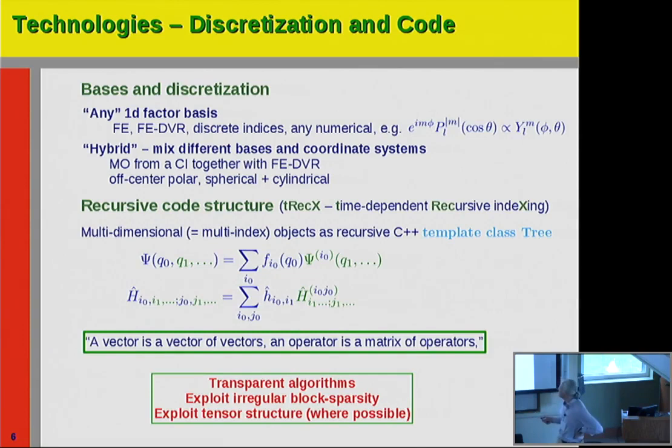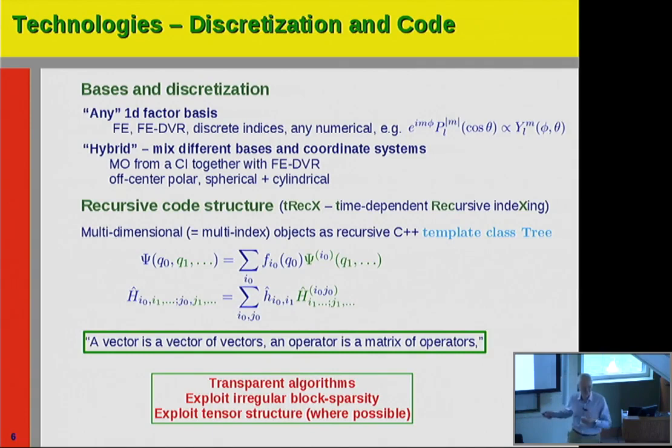You can easily exploit block structure, even if it's rather irregular. You can exploit tensor structure if applicable — if there is a meaningful tensor structure in your operators, you can use it. Alternatively, there are many zeros, or there's a tensor product. These are the two good cases. The bad case is when it's just full.